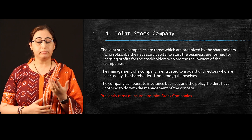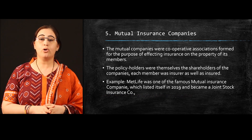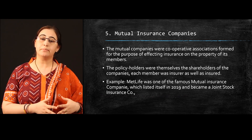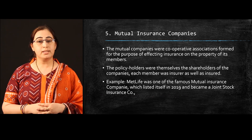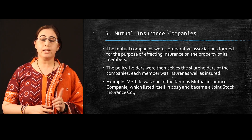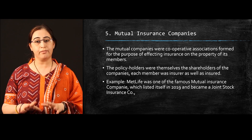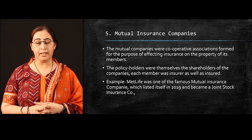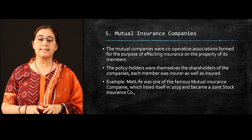The next type is mutual companies. Mutual insurance companies are cooperative associations formed for the purpose of providing effective insurance on the property of their members. Most of these companies operate on the principle of a corporation. The key distinction is that the policyholders are themselves the shareholders. This is the basic difference between a joint stock company and a mutual insurance company — in a joint stock company, shareholders and policyholders are different people, whereas in a mutual insurance company, the policyholders are the shareholders. MetLife Insurance is one very famous mutual insurance company in India.